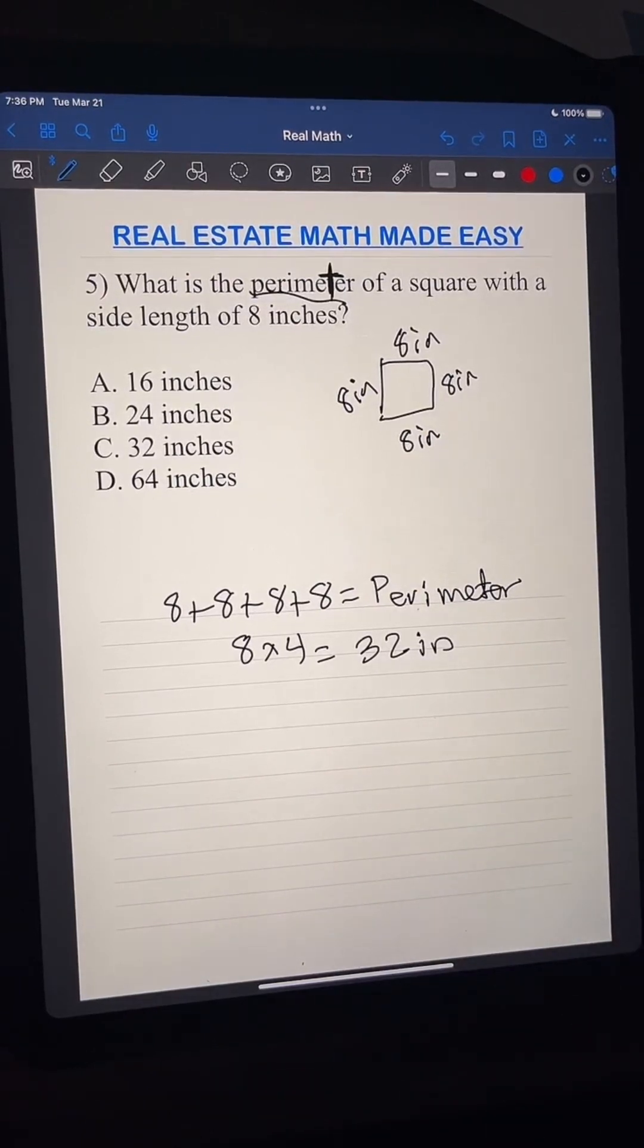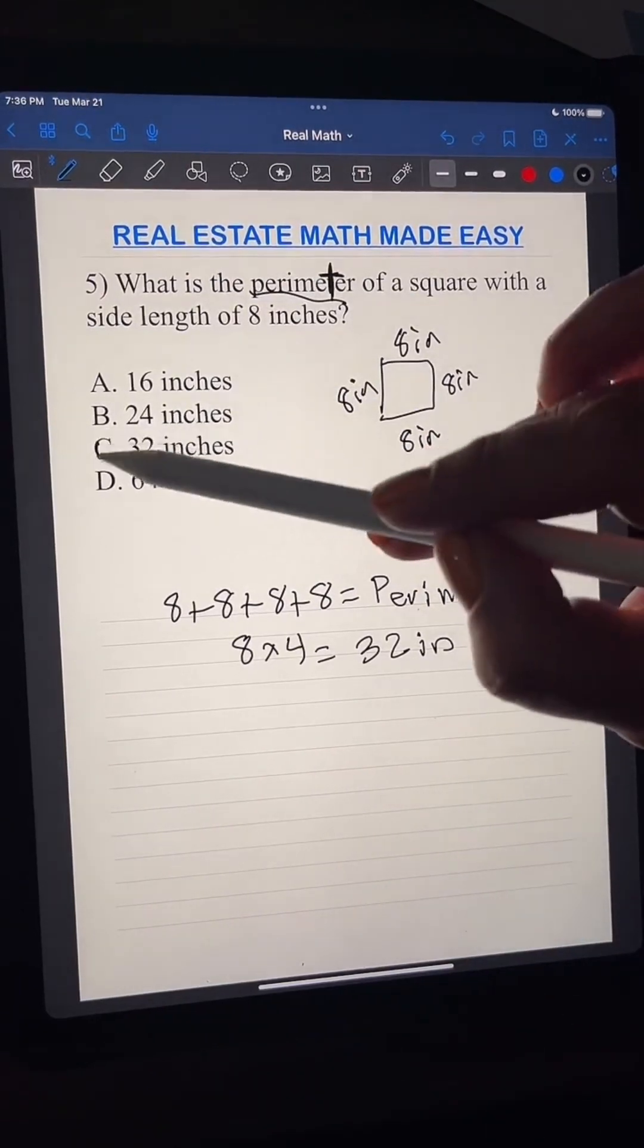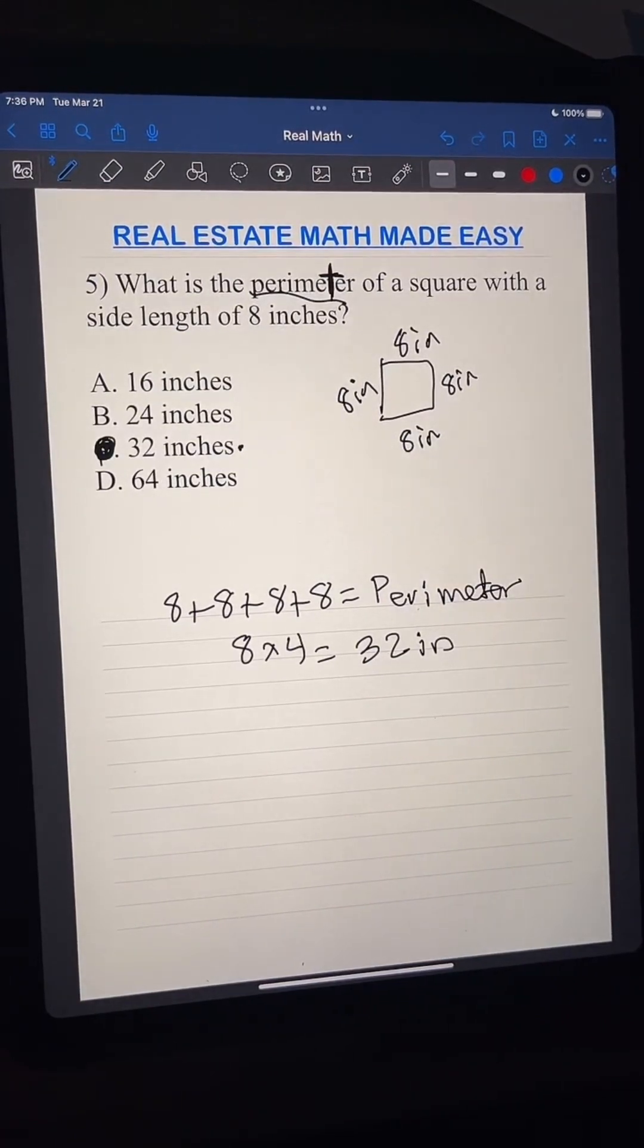Now, do we put square inches? No, no, no, no, because we're not multiplying. We are adding. So it's just 32 inches. C is the letter. The answer is C.